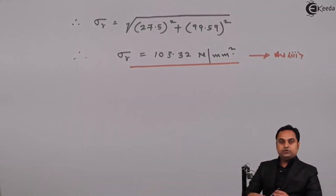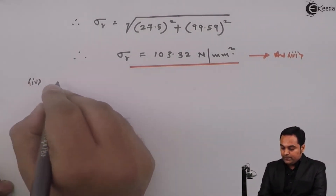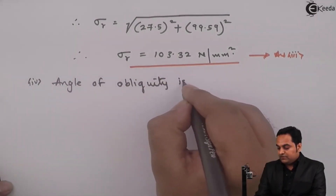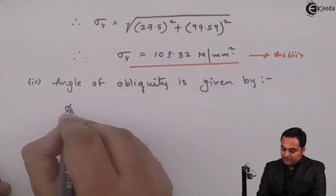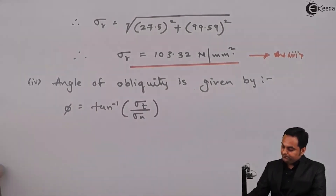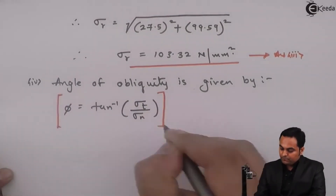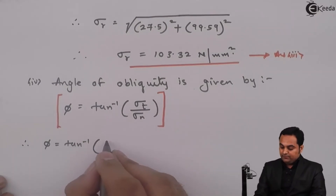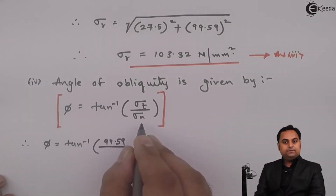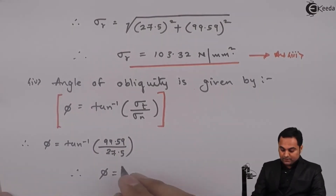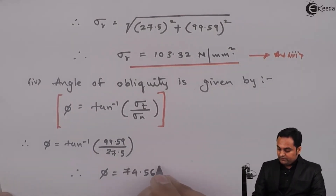The fourth question is the angle of obliquity, given by phi = tan⁻¹(sigma t / sigma n). Substituting sigma t = 99.59 and sigma n = 27.5, phi comes out to be 74.56 degrees. This is the fourth answer.